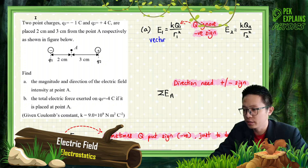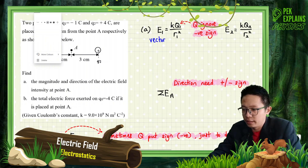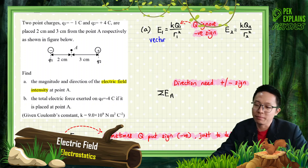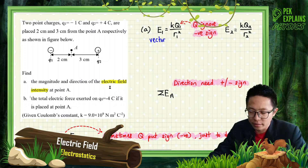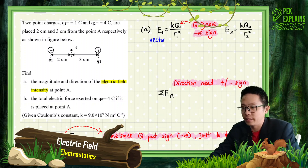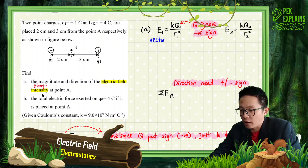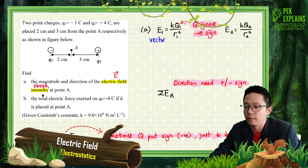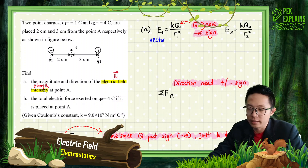The question asks for electric field intensity. Sometimes we say electric field strength, but sometimes we use electric field intensity — both mean the same thing. Both refer to E. Intensity and strength are the same.